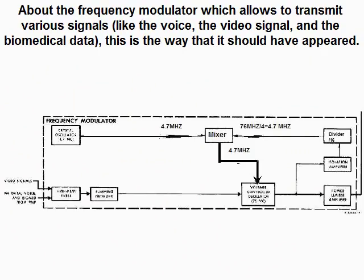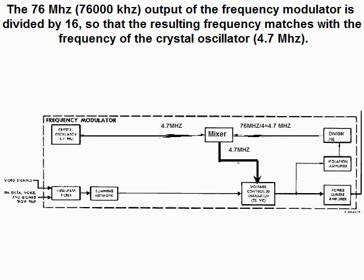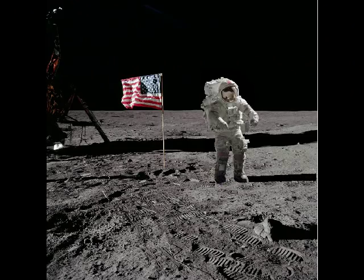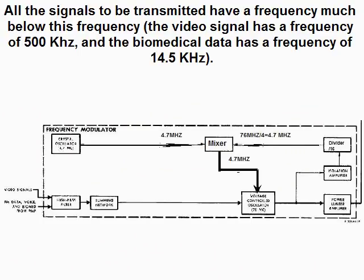About the frequency modulator which allows transmitting various signals like the voice, the video signal, and the biomedical data — this is the way it should have appeared. The 76 MHz output of the frequency modulator is divided by 16 so that the resulting frequency matches the crystal oscillator at 4.7 MHz. The output of the PLL mixer has a frequency of 4.7 MHz, which guarantees that any noise with a frequency under 4.7 MHz (4700 kHz) will not pollute the transmitted signal. All signals to be transmitted have frequencies much below this: the video signal has a frequency of 500 kHz, and the biomedical data has a frequency of 14.5 kHz.